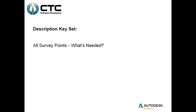Description key sets. A description key set is basically a database containing all survey points — not 90%, maybe 97%. You'll have oddball codes that come up once every two years that you don't really need in there. You want a description key set that handles 95-97% of all your survey codes: basic top of curb, edge of pavement, edge of concrete, concrete shots, tree shots.